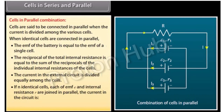The current in the external circuit is divided equally among the cells. If N identical cells, each of EMF E and internal resistance r, are joined in parallel, the current in the circuit equals NE divided by (Nr + R).